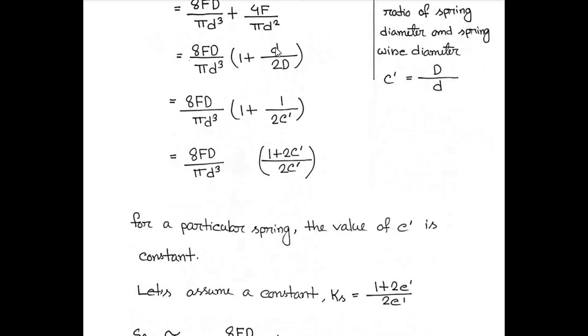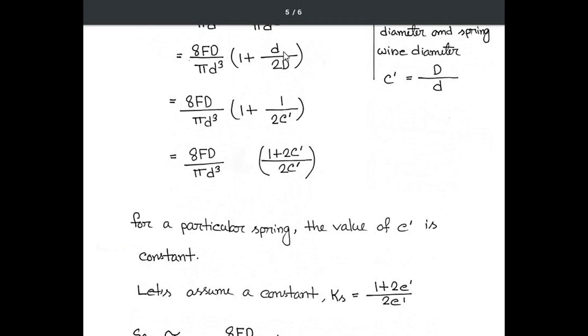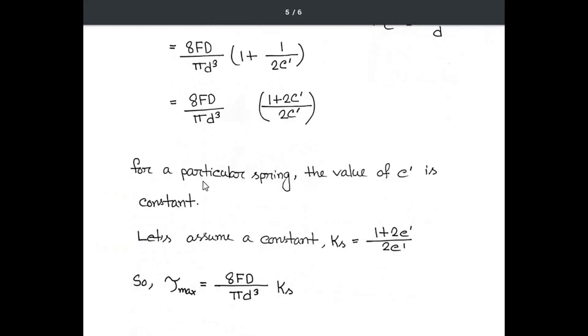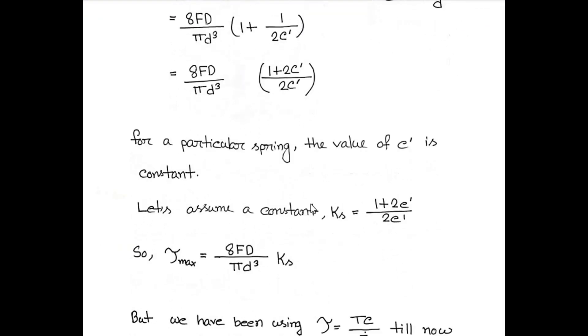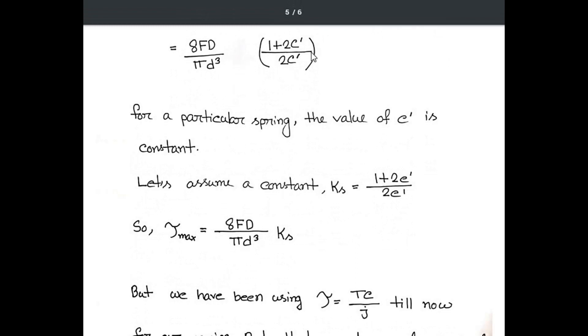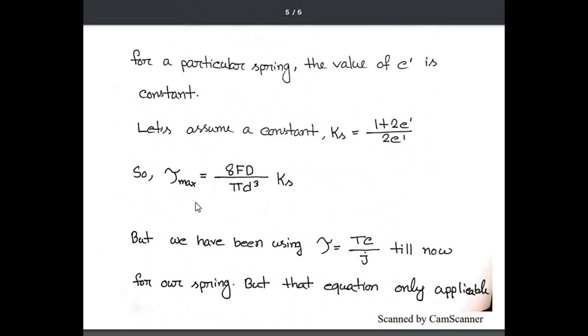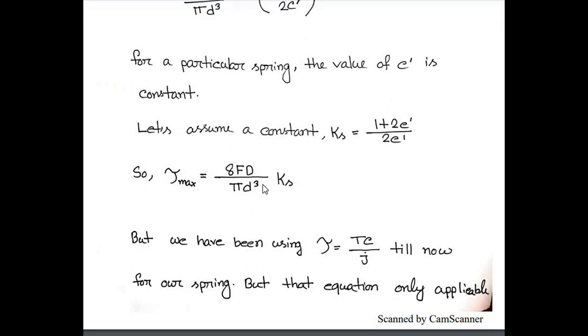Instead of small d by 2 capital D, we're taking 1 by 2c prime. For a particular spring, the value of c prime is constant. So let's assume a constant k_s which will replace this constant. We can write tau max equal to 8FD by pi d cube times k_s.